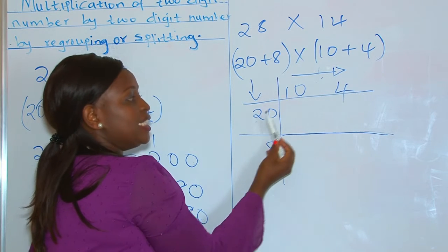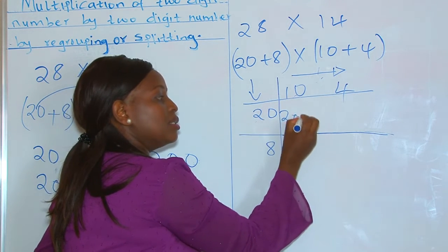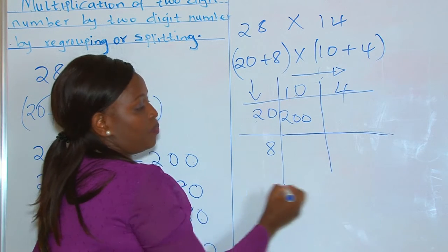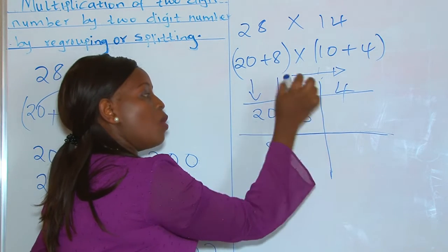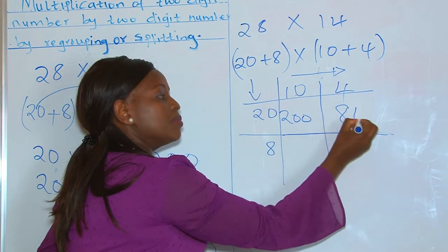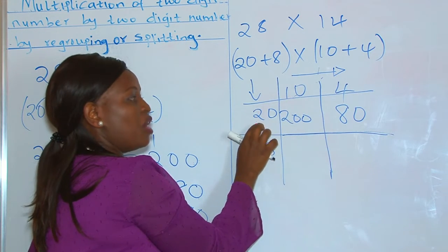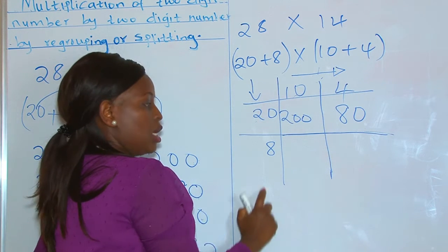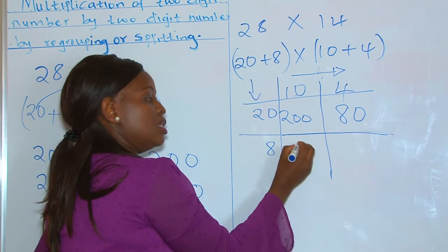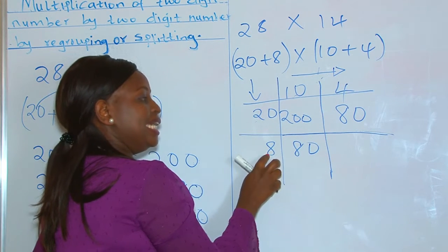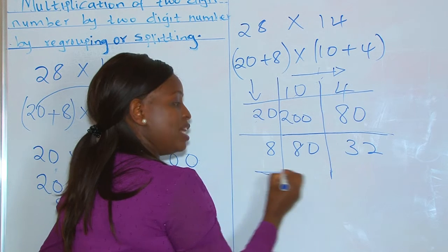So, 20 times 10 is 200. 20 times 4 is 80. We are done with 20 — we have multiplied everything up there. Now we go to 8: 8 times 10 is 80, and 8 times 4 is 32.